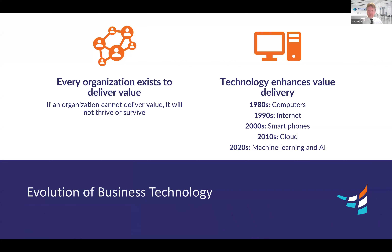If you cannot deliver value, you will struggle. You will go bankrupt. If you think of big companies from the past that aren't so big anymore — like America Online, Toys R Us, Blockbuster Video, Kodak — these are all companies that did not make it because new advanced technologies came along and they didn't quite adjust to it. As artificial intelligence becomes more and more a part of what we do, if you are not on board, you're going to get left behind.